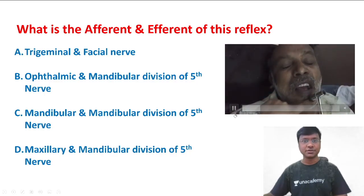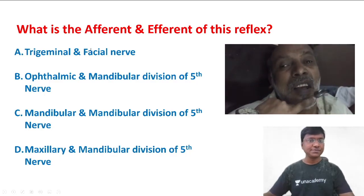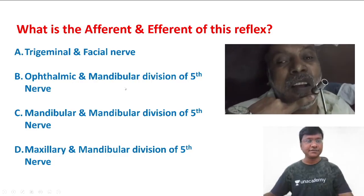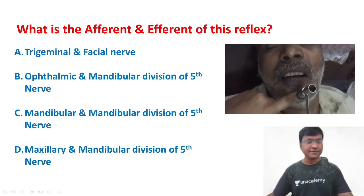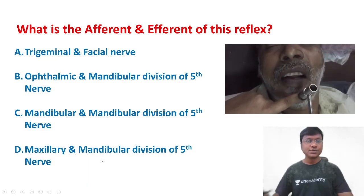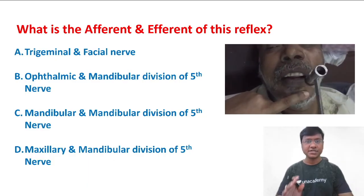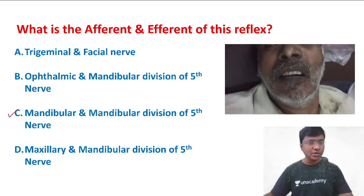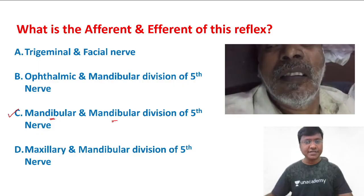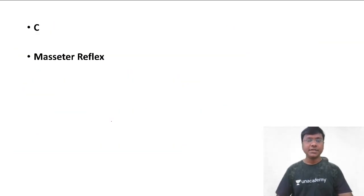Looking at the options — trigeminal and facial nerve, ophthalmic and mandibular division of the fifth nerve, mandibular division afferent with mandibular division efferent, or maxillary division afferent with mandibular division efferent — the correct answer is that both the afferent and the efferent of this reflex are the mandibular division of the fifth nerve.